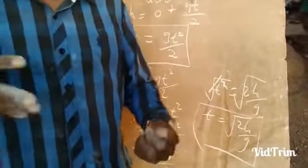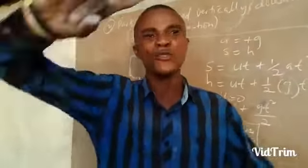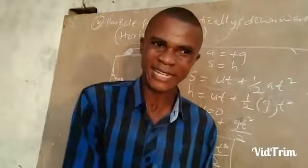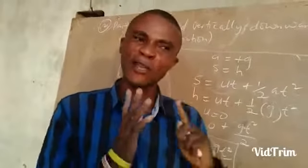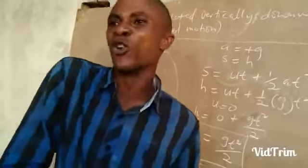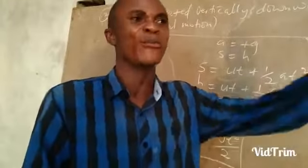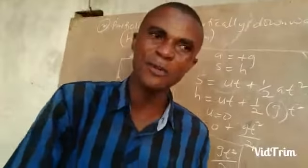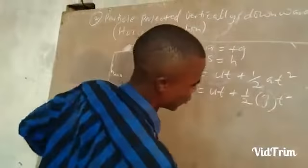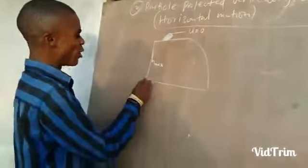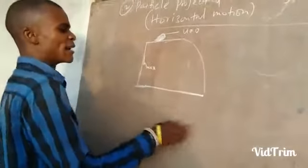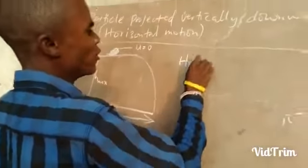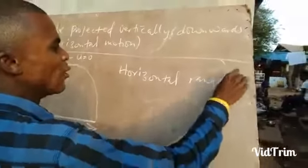Let us now move to the case where the object is on the ground. When an object falls and reaches the ground surface, it will move — it rolls. We will look at the distance it covers while moving on the ground. The distance the object covers on the ground after falling is called R, and R is known as the horizontal range.